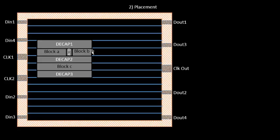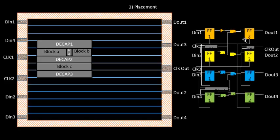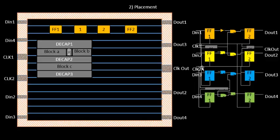We have the pre-placed cells from the floor plan stage already in position. The placement stage ensures those locations are not moved and that no new cells are placed in those reserved areas. Now, taking the physical view of the netlist, we place the components. Flip-flop 1 is placed close to input port DIN1, flip-flop 2 is placed close to DOUT1, and the combinational cells are placed close to both flip-flops.